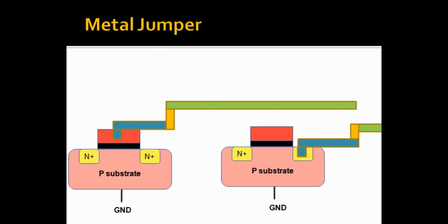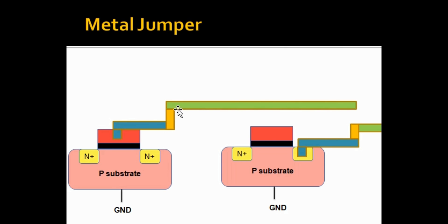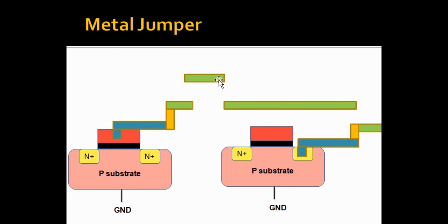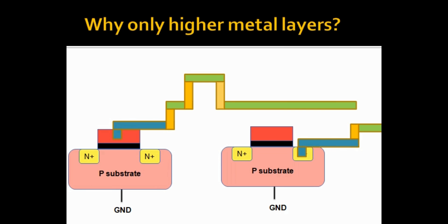The solution is a metal jumper in a higher metal layer. We break Metal 3 near the gate and add a jumper in a higher metal layer — Metal 4. So we break Metal 3, add Metal 4, then Metal 3 again, then Metal 4, then Metal 3. Since Metal 4 is not yet formed during fabrication up to that point, the long wire is no longer connected to the gate, and therefore it will not damage the gate oxide. There will be no antenna violation.